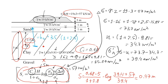So this means that when we build the embankment, over time — we still don't know how long it will take, so watch my other videos — the settlement will be 0.47 meters.